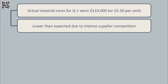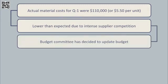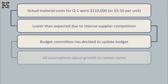Consequently, the Budget Committee has decided that the budget for the next 12 months should be updated to reflect this lower material cost of $5.50 per unit. All assumptions regarding budgeted growth in units should remain as per the original budget.